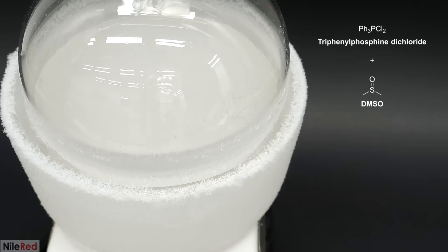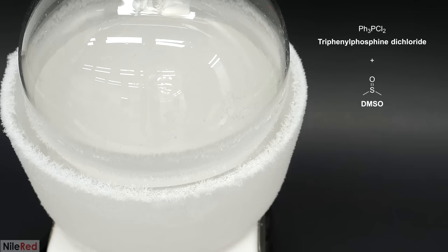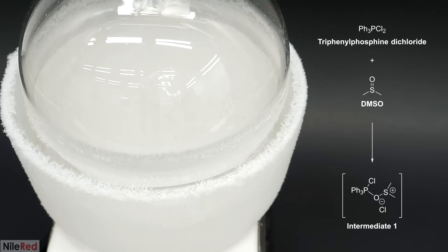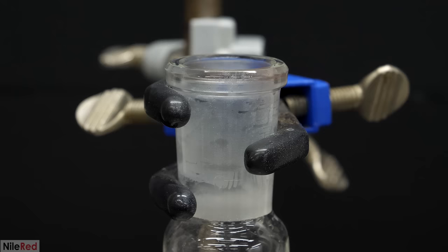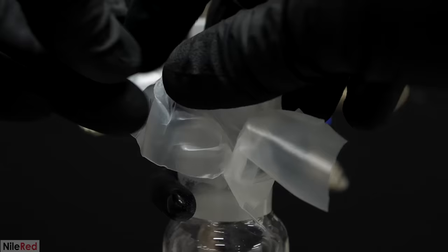As the DMSO was added, it slowly reacted with the triphenylphosphine dichloride to make this intermediate molecule. This intermediate isn't super soluble in cold DCM though, so as the reaction proceeded and more of it was made, it started precipitating out. This caused the solution to turn white and opaque but the contrast in the flask here isn't the best so it's kind of hard to tell. This now had to be stirred like this for the next hour so I covered the top with plastic to prevent any moisture from getting into the flask.